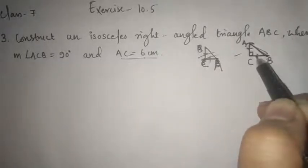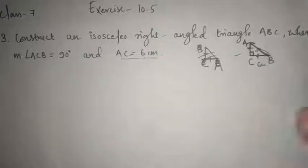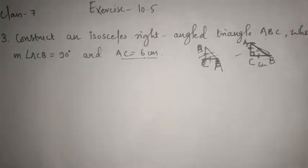So if you have two sides equal and another side unequal, then we can consider that as an isosceles triangle, isn't it?